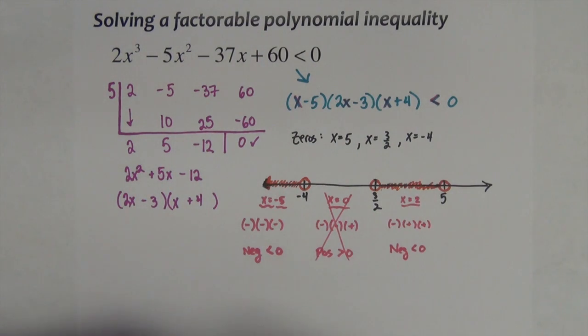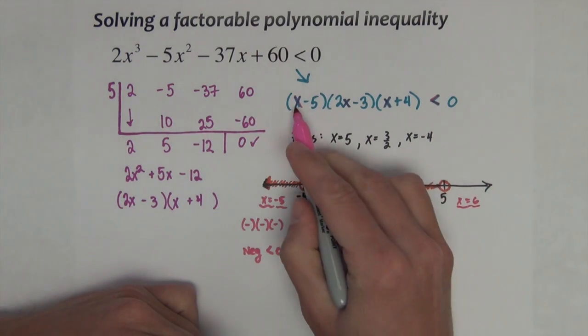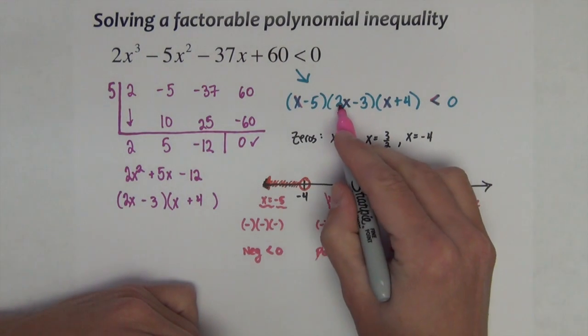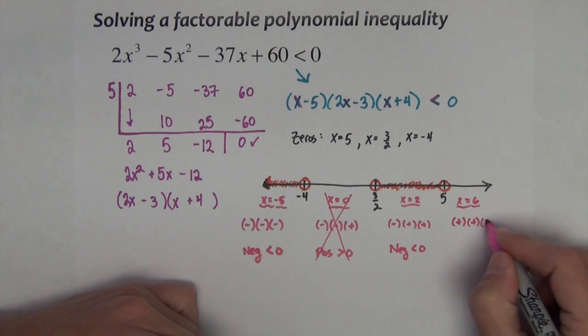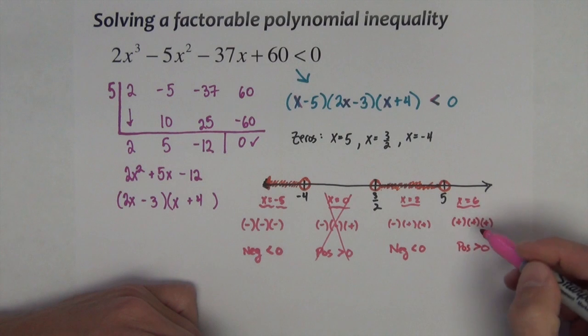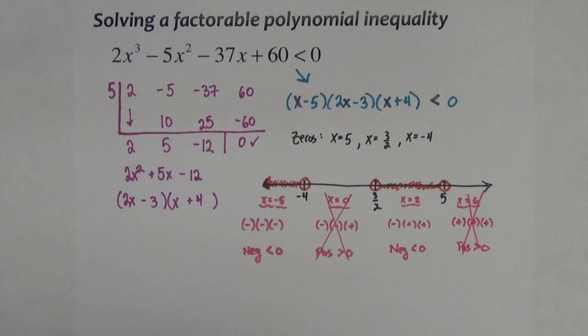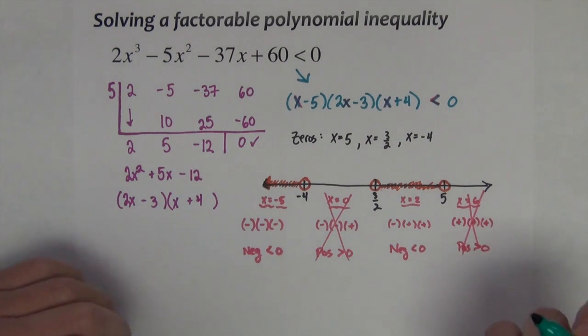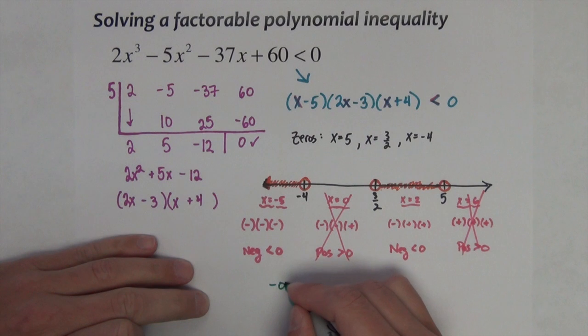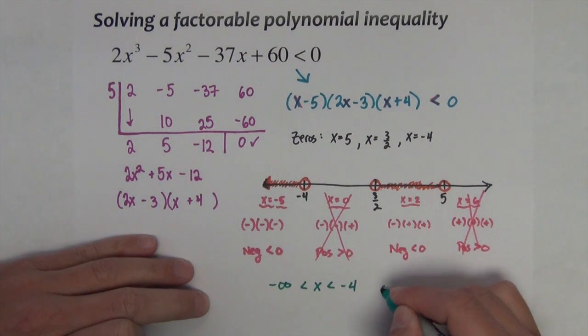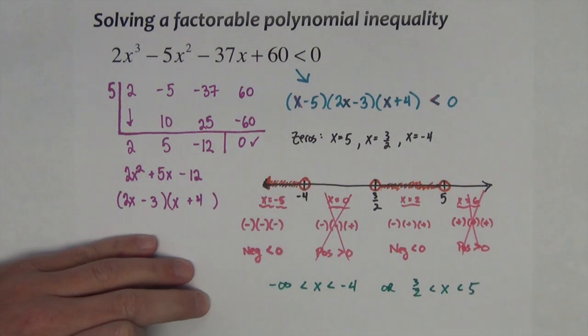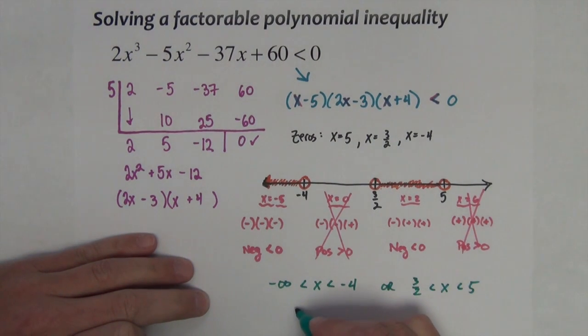Finally, we'll pick a number greater than 5. I might try x = 6. 6 minus 5 is positive, 2 times 6 minus 3 is positive, 6 plus 4 is positive. Three positive numbers are positive, which are bigger than 0. We want less than 0 things, so we don't want that either. Our solution can be summarized in two ways: -∞ < x < -4 or 3/2 < x < 5. Or we could give it in interval notation: (-∞, -4) and (3/2, 5). Either one of these ways to write the solution would be acceptable.